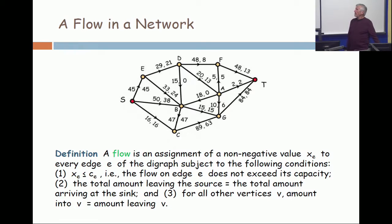There's a certain amount leaving the source, and that's equal to the amount arriving at the sink. And in every internal vertex, the amount in equals the amount out. The value of the flow is the amount which leaves the source, which again is the same as the amount that arrives at the sink.